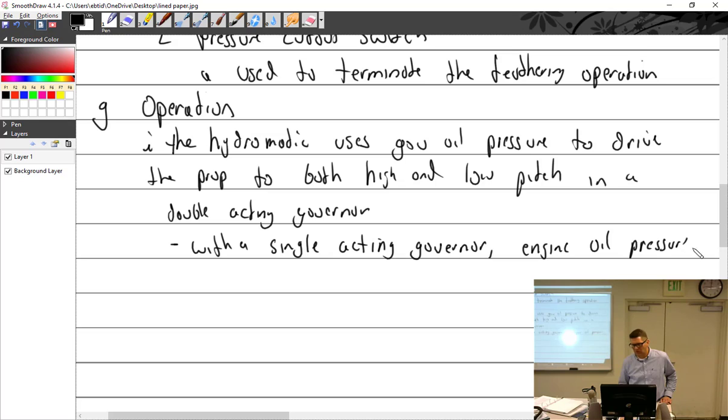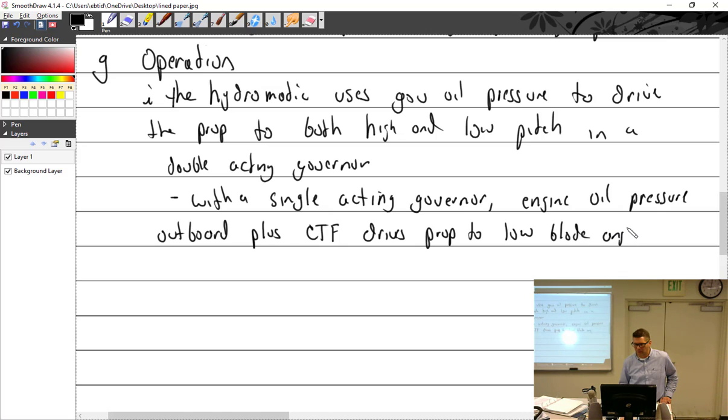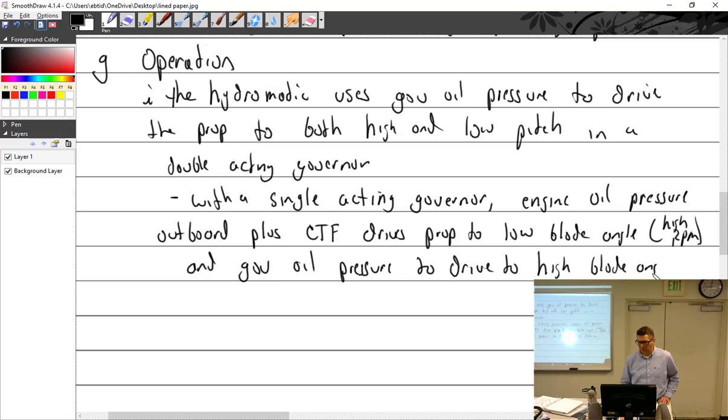Engine oil pressure outboard plus centrifugal twisting force drives prop to low blade angle, right? Low blade angle, high RPM. And governor pressure to drive to high blade angle, which is low RPM. There we go.